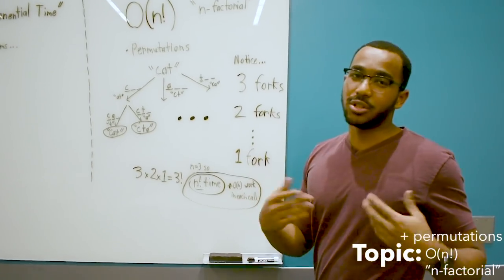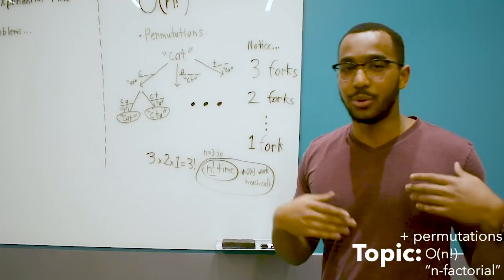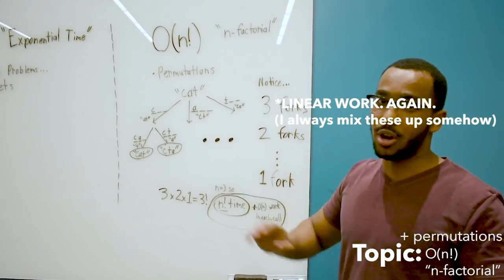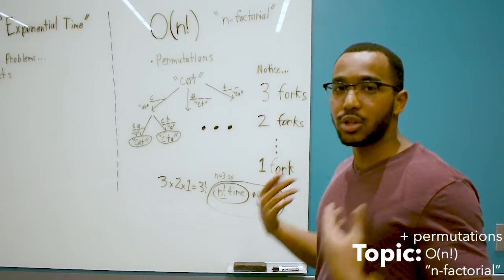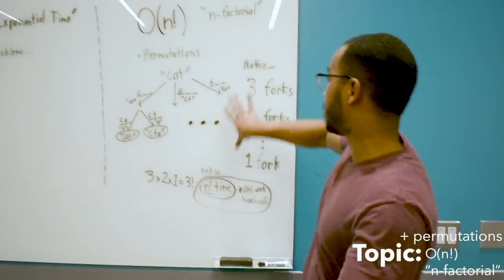It's actually n times n factorial, because if we do constant amount of work to copy the string over in each of these n factorial calls, it depends how much work you're doing in each call. But there's going to be n factorial permutations and n factorial calls, which follows this pattern.